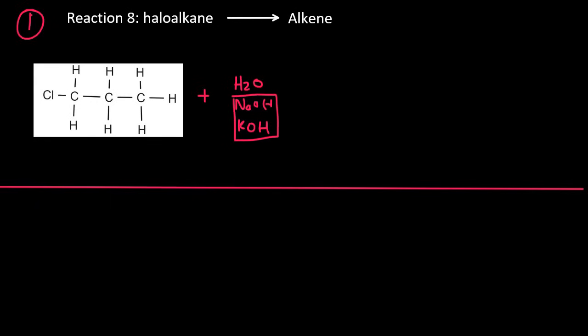I'm going to start with the first method, and I'll call this method one. So with method one, we are going to go from a halo alkane to an alkene. And remember when I showed you guys reaction two, we could use something like H2O, NaOH, or KOH. And I told you that the NaOH and the KOH must be very dilute.